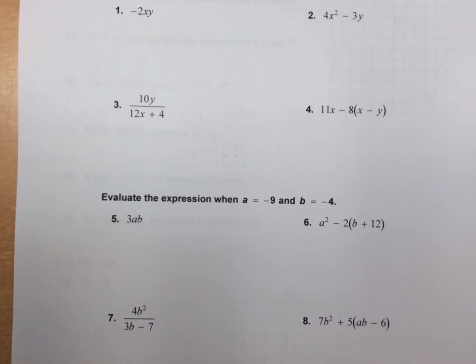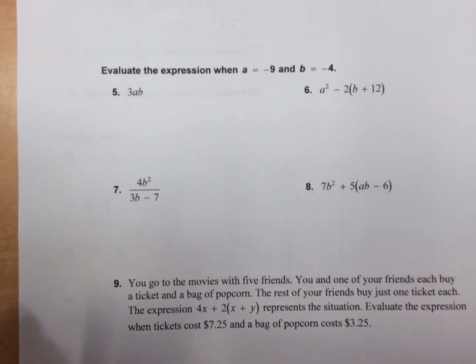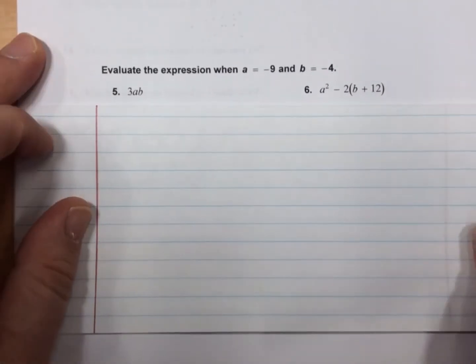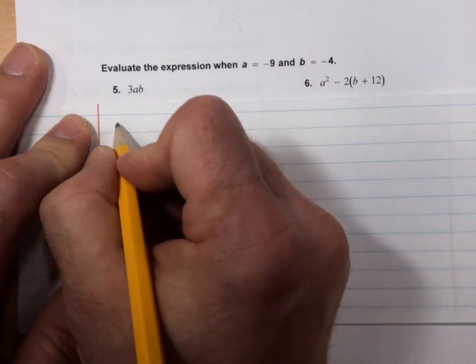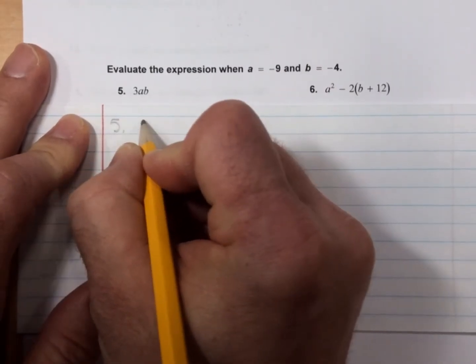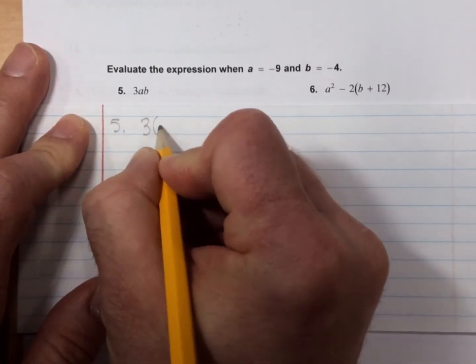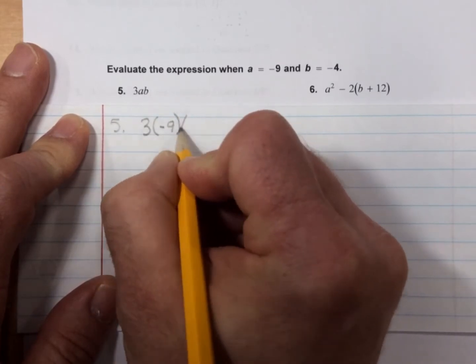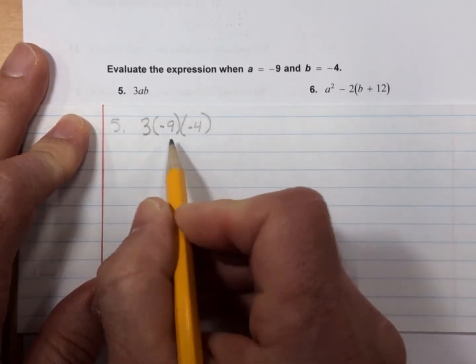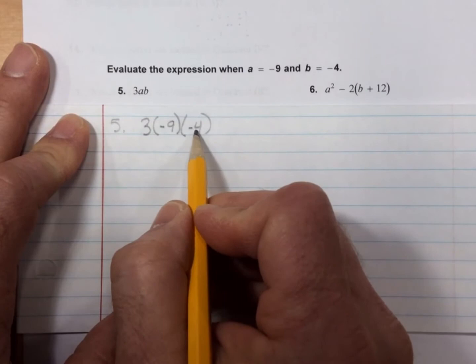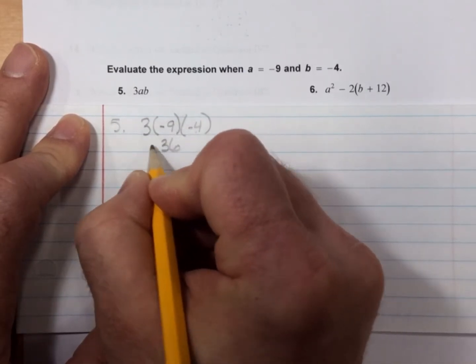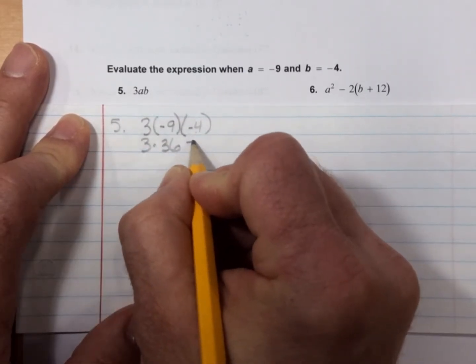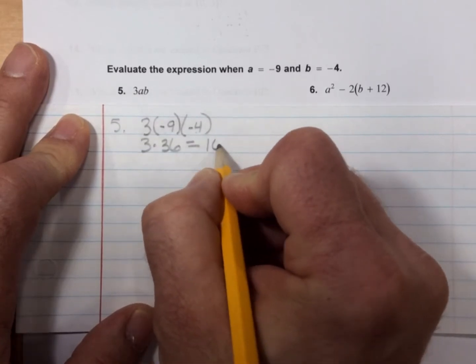On numbers 5, 6, 7, and 8, a is -9, and b is -4. So we have, for number 5 here, we have 3 times -9 times -4. Well, -9 times -4 is positive 36. And 3 times 36 is 108.